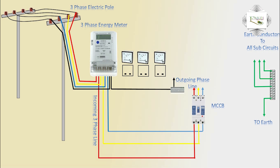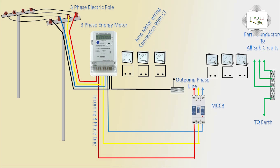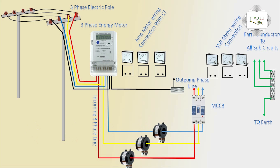Ammeter — three phase ammeter wiring connection with CT. Voltmeter — three phase voltmeter wiring connection. CT connection: CT1, CT2, CT3. Three-phase line — phase per phase is CT1, CT2, CT3. CT means current transformer.